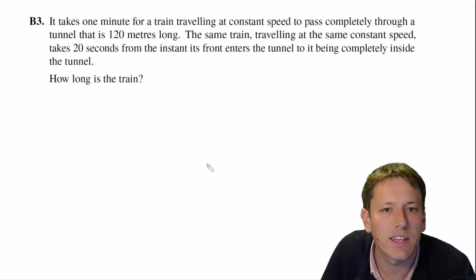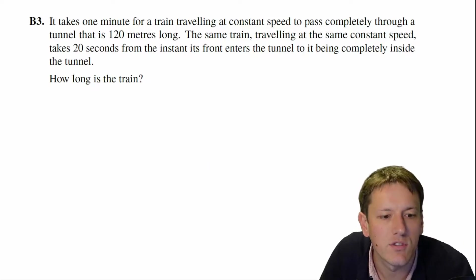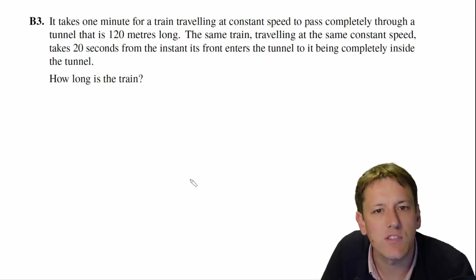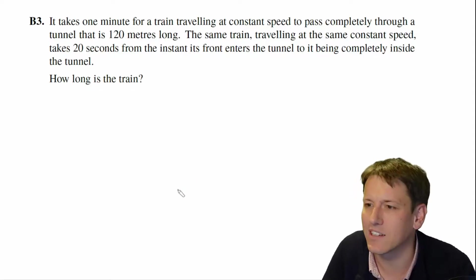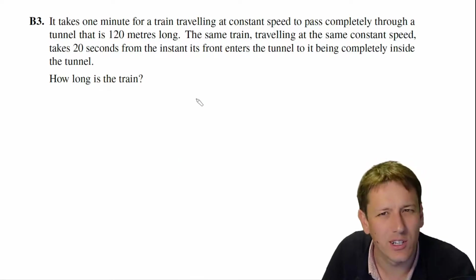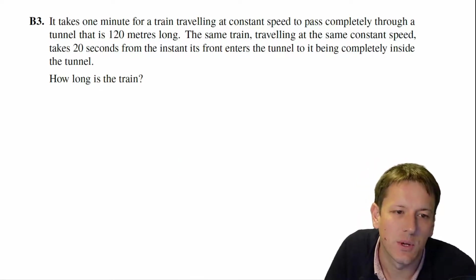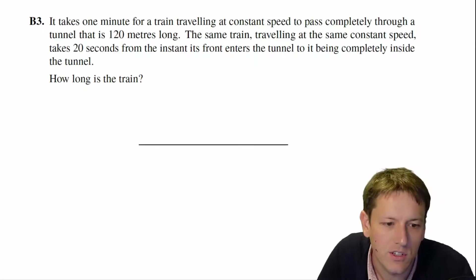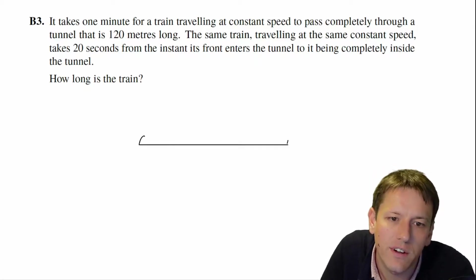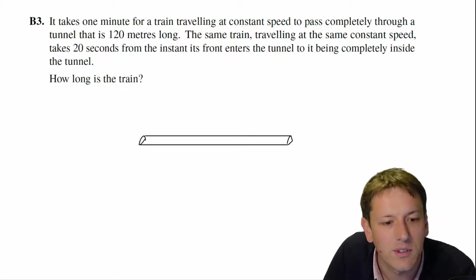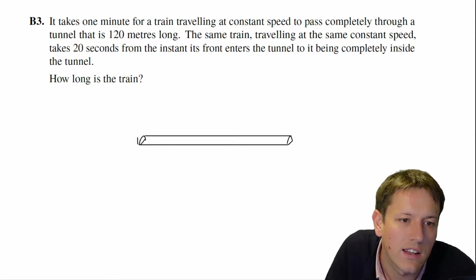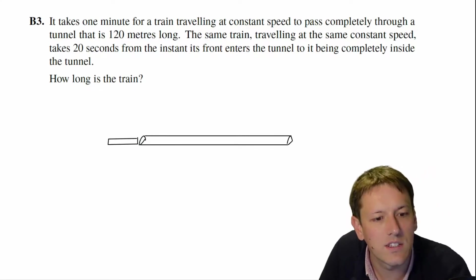It takes one minute for a train traveling at constant speed to pass completely through a tunnel that is 120 metres long. The same train at the same speed takes 20 seconds from when its front enters the tunnel to being completely inside the tunnel. How long is the train? I'd really recommend a simple diagram to get a sense of what's going on, so let me draw a very simple picture of a tunnel and a train just about to enter it.